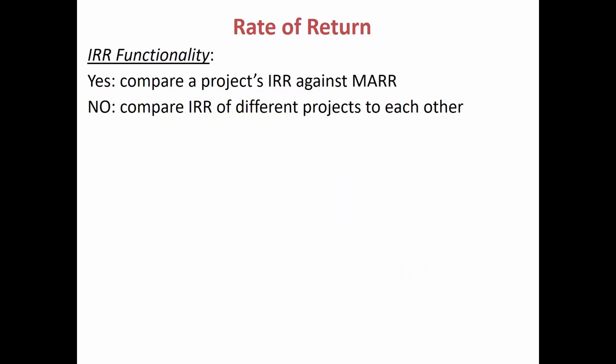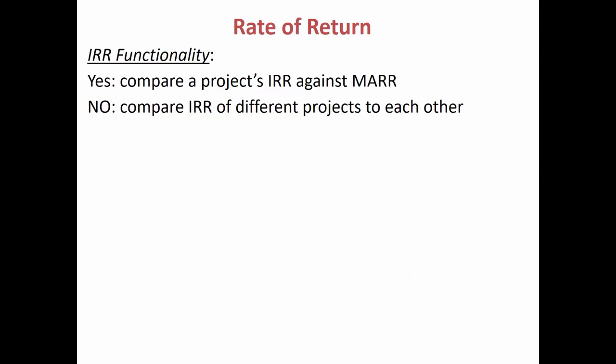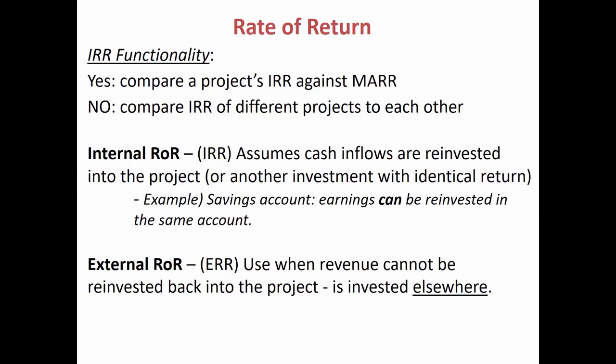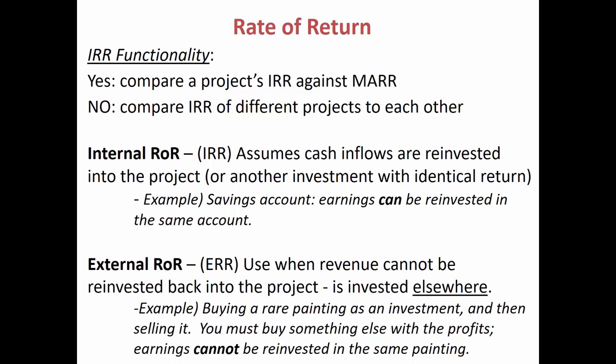And so the reason I bring it up is this is like the perfect illustration of a situation where you can't calculate the internal rate of return because the profits have to go somewhere else. In this case, it can be reinvested in some other art, but that other piece of art that's being purchased, it's probably not going to appreciate the same amount over the same time period. And so it's just going to be a different situation. And so this is the most extreme example of that.